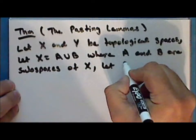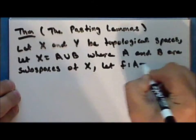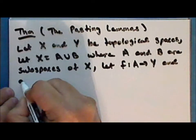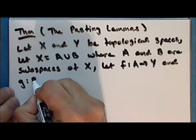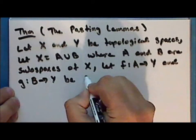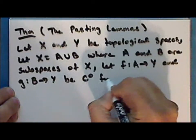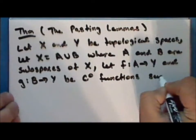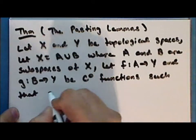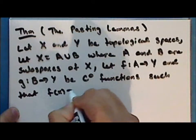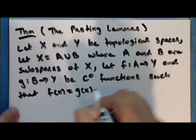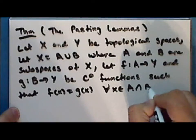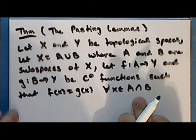Let the function f, mapping the subspace a into the space y, and the function g, mapping the subspace b into the space y, be continuous functions, such that f of x is the same as g of x for every point x in the intersection of a and b — that is, every point that is common to both domains.